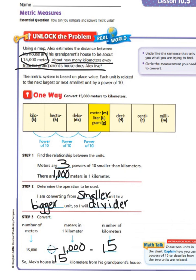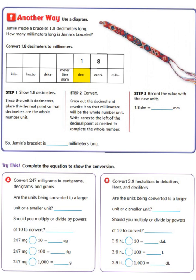Now let's take a look at another way that we can do this and that is to use a diagram. So Jamie made a bracelet 1.8 or 1 and 8 tenths decimeters long. How many millimeters long is Jamie's bracelet? So we're going to convert 1 and 8 tenths decimeters to millimeters.